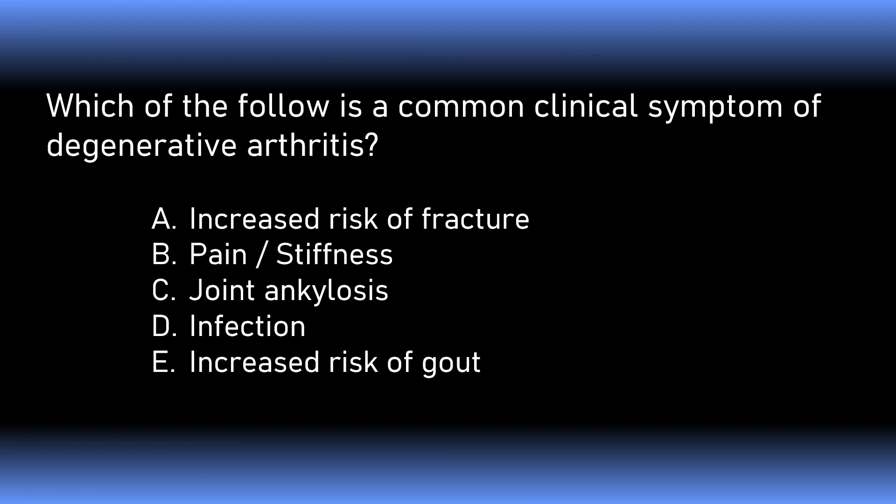Which of the following is a common clinical symptom of degenerative arthritis — is it increased risk of fracture, pain and stiffness, joint ankylosis, infection, or increased risk of gout? The correct answer is B: pain and stiffness.